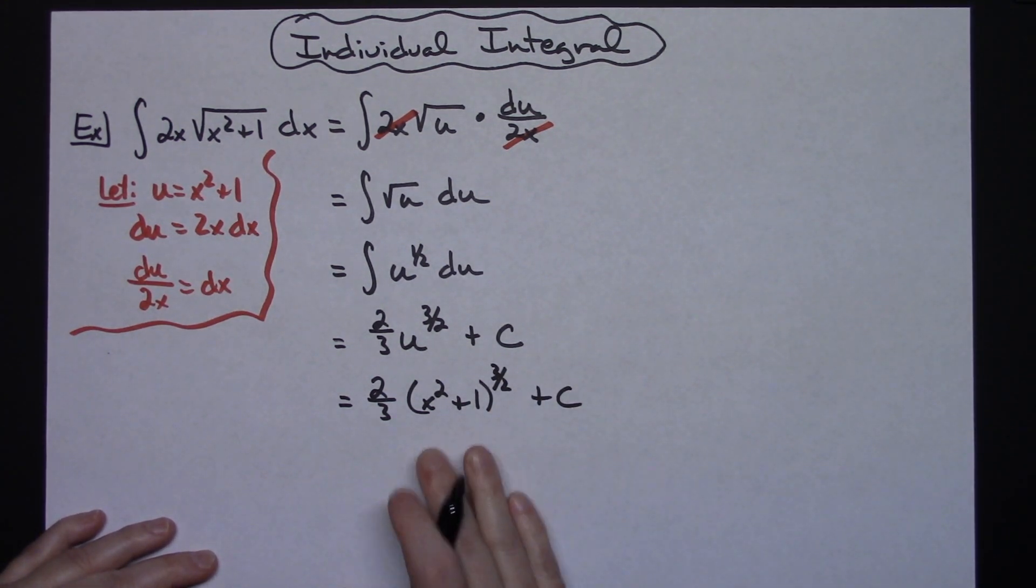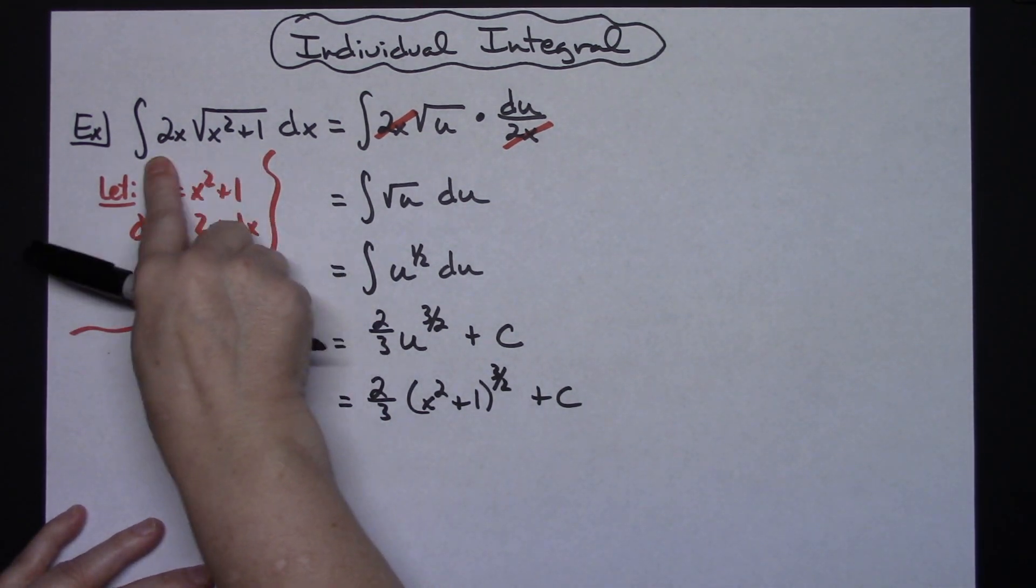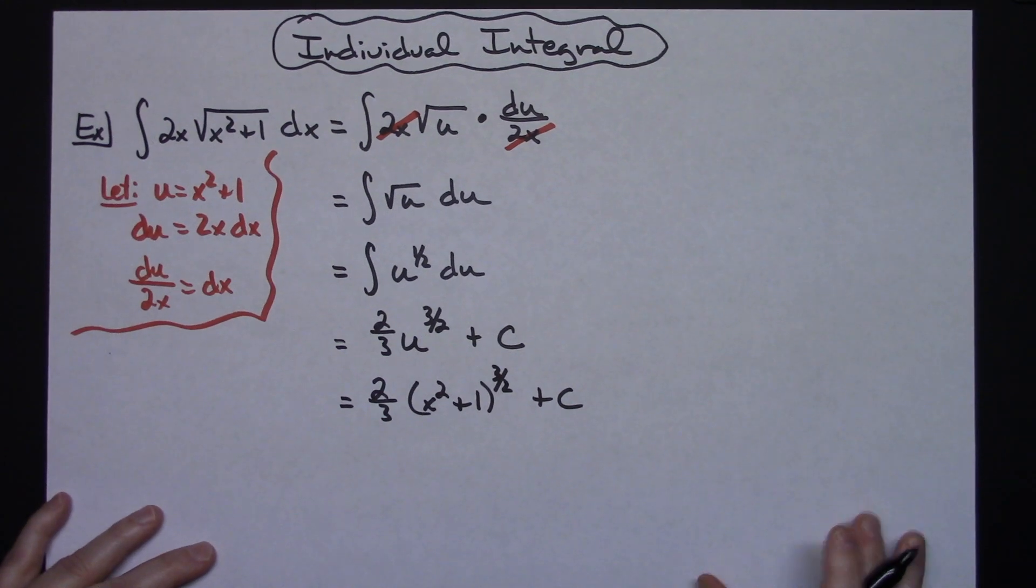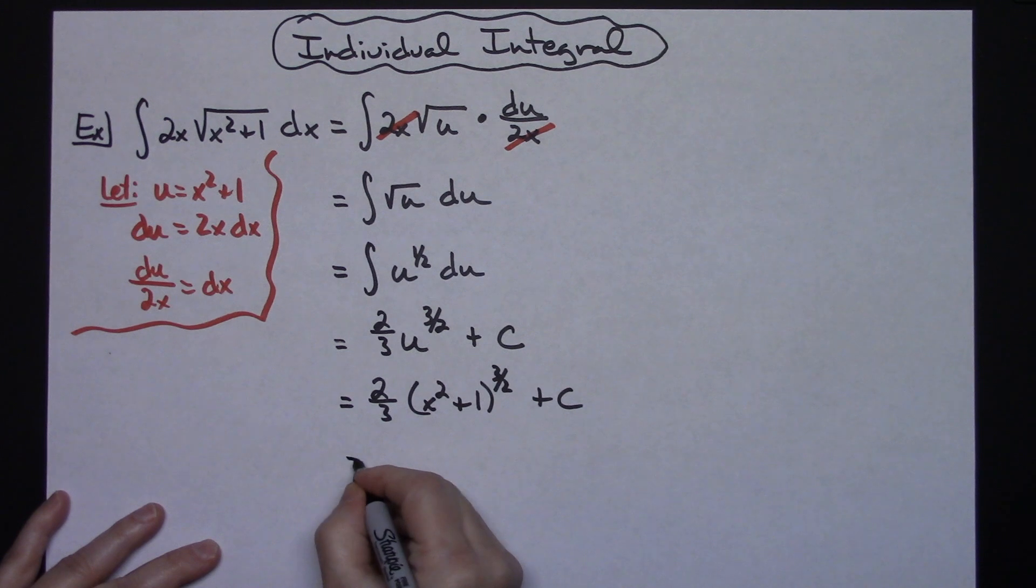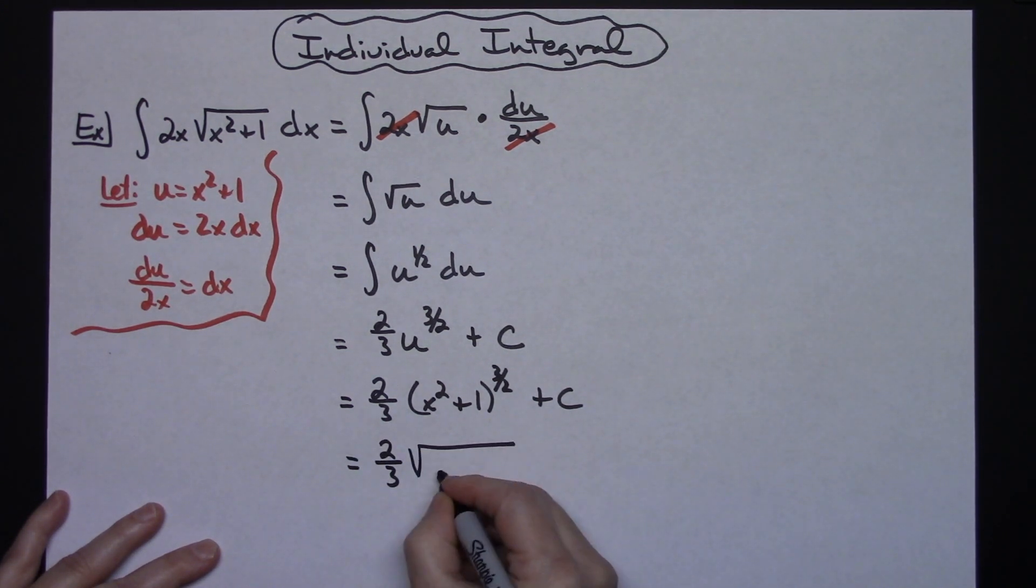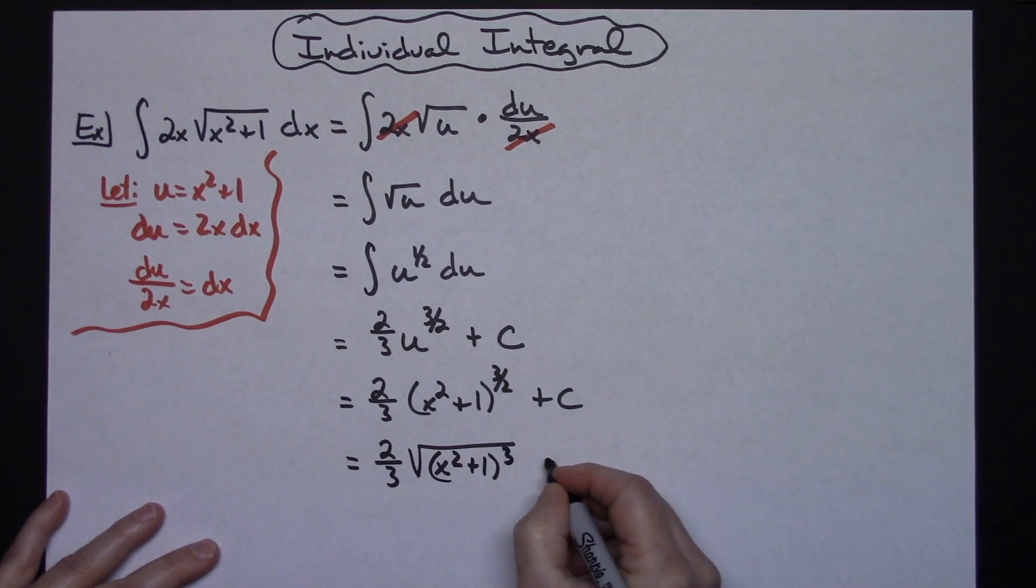Actually, you're done at that point. There's no reason to rewrite unless you would want to, since the original integral had that square root in it, you could rewrite this in radical form. Then your answer would look like 2 thirds times the square root of x squared plus 1 to the third power and then plus C.